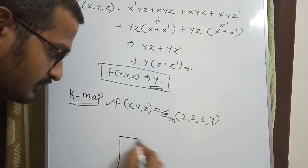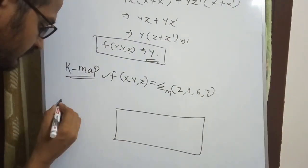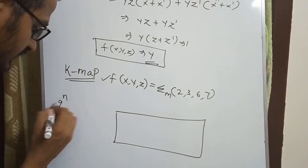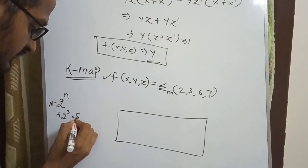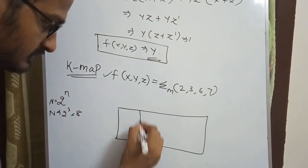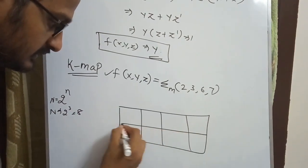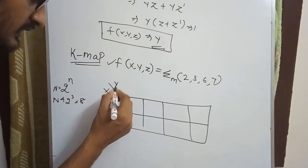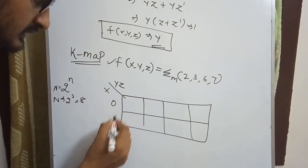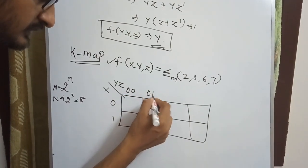For three variables, 2 to the power of 3 equals 8. We set up x, y, z with values 000 through 111, giving us positions 0 through 7.